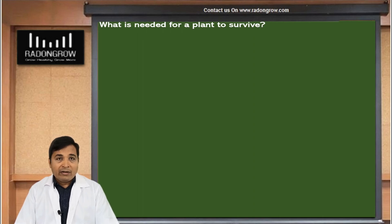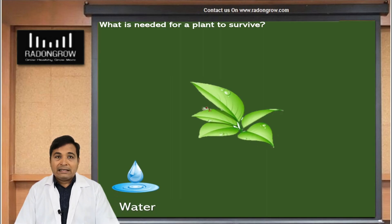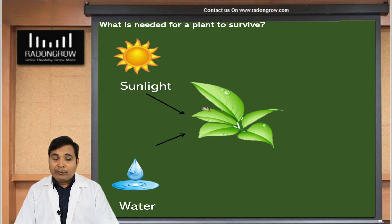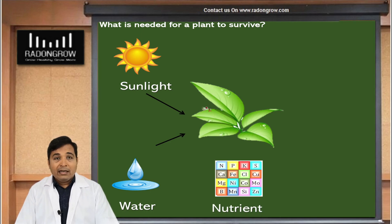For growing a plant, the first requirement is water. The second is sunlight or artificial light. The third is nutrients — NPK, calcium, magnesium, sulfur, and micronutrients are required to grow a plant. The fourth is carbon dioxide, which is a plant food and is also required.